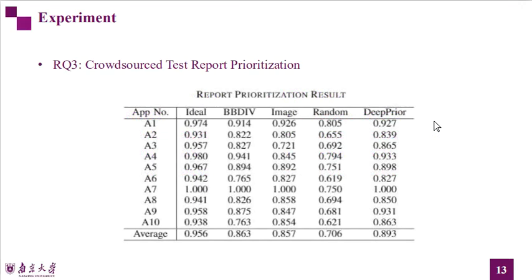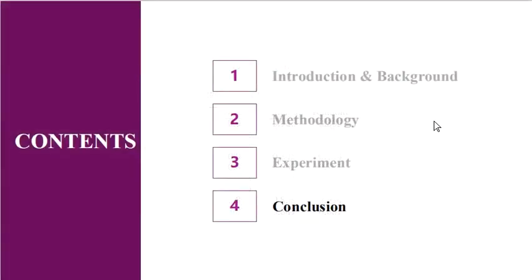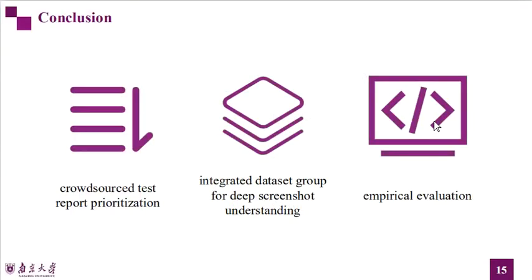We compared DeepPrior with four different prioritization strategies. The results are shown in the table. In conclusion, we propose a crowdsourced test report prioritization tool, DeepPrior, with deep screenshot understanding. DeepPrior transforms the app screenshots and textual descriptions into four different features.